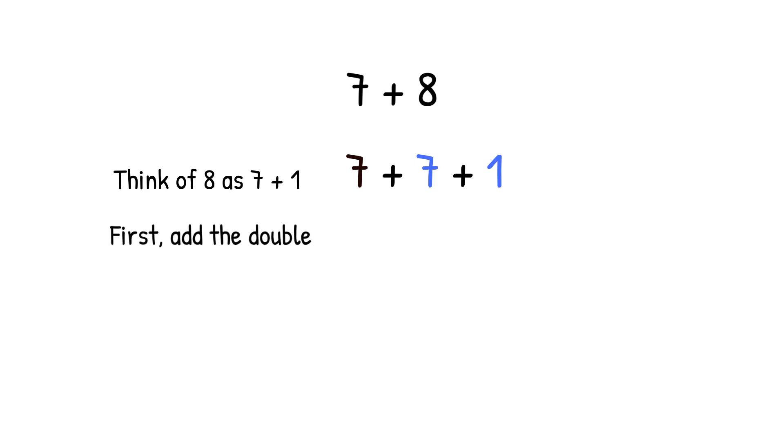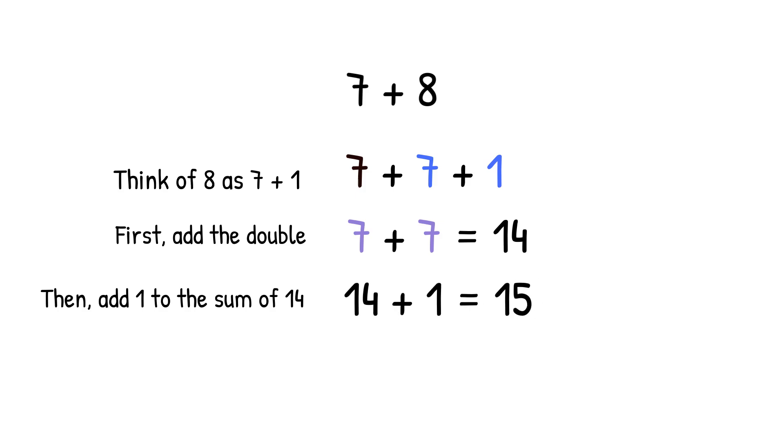First add the double, seven plus seven equals fourteen. Then add one to the sum of fourteen. Fourteen plus one equals fifteen, so seven plus eight equals fifteen.